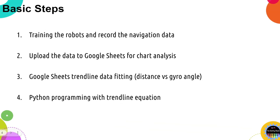There are four basic steps for machine learning. The first is to train the robot and record the navigation data. The second is to upload the data to Google Sheets for chart analysis. Third, use Google Sheets to make a trend line to fit the data, using distance as the x-axis and gyro angle as the y-axis. Fourth, program the trend line equation onto Python.